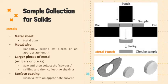For metals in the form of a sheet, random samples can be collected using a metal punch. For metal wires, samples are obtained by randomly cutting off pieces of an appropriate length. For larger pieces of metal such as metal bars or bricks, the samples are sawed or drilled at randomly selected points and the resulting shavings are collected. Lastly, for metals that are surface coatings, these are collected by dissolving the coating with an appropriate solvent.